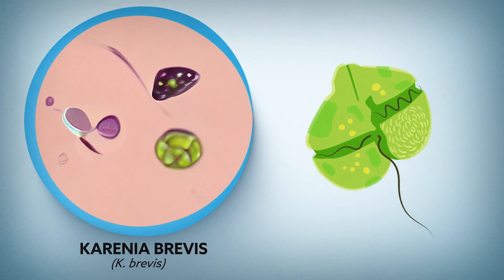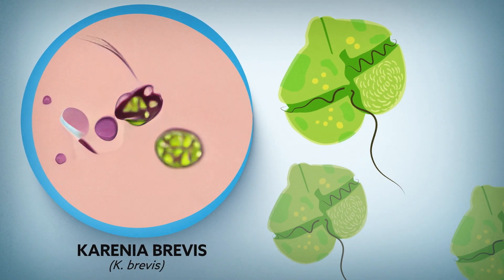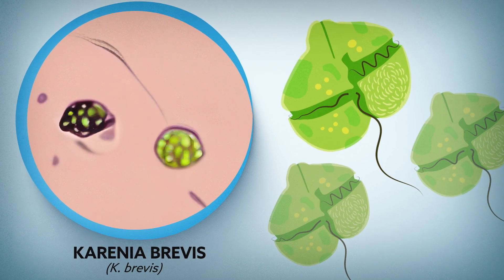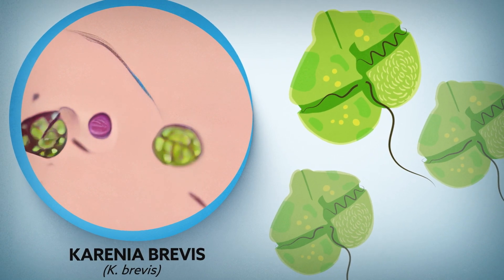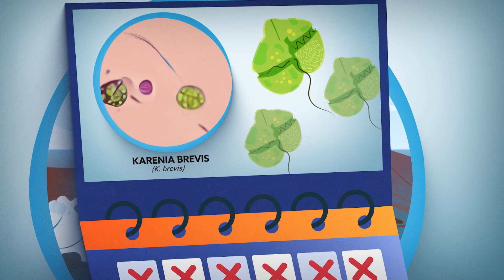In Florida, red tide refers to blooms of a species commonly observed in the Gulf of Mexico called Karenia brevis. A bloom can last for days, weeks, or even years.